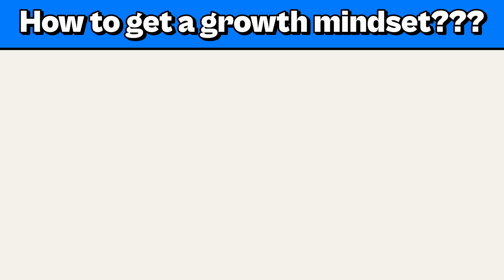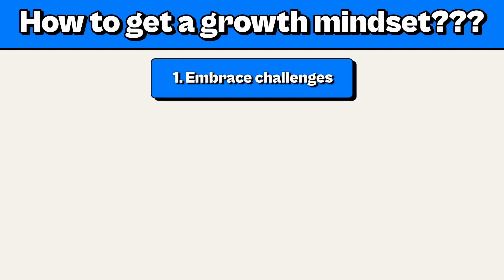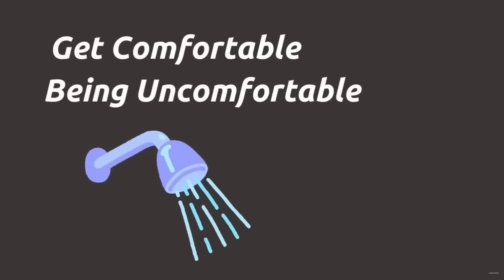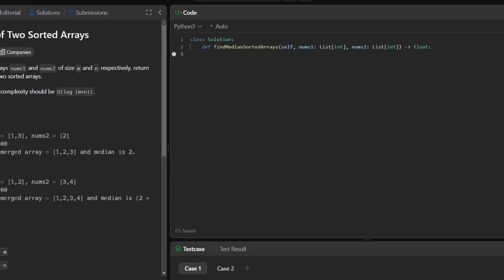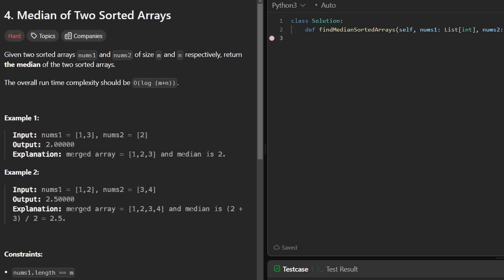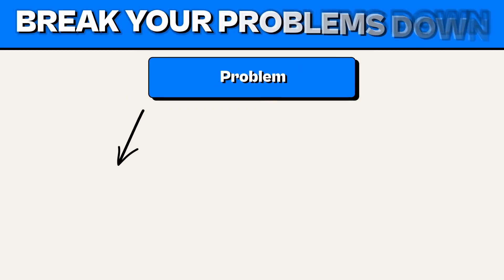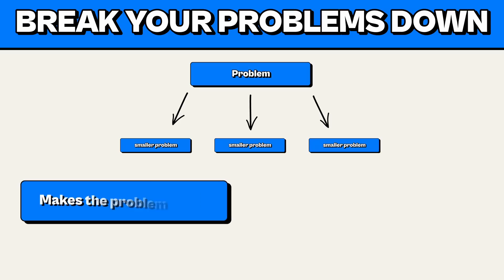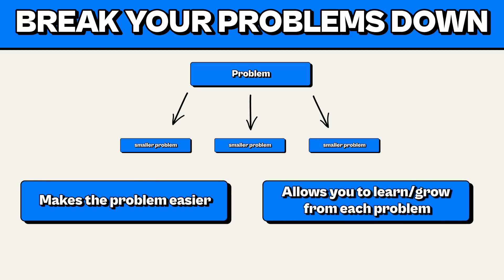Well, in order to develop a growth mindset, the first thing you need to do is embrace challenges. I liked how BigBoxSWE phrased it: get comfortable being uncomfortable. When you encounter a difficult problem, don't shy away from it. Thug it out. I've said this multiple times: break your problems down into smaller parts and tackle each part one by one. It really does help. It makes the problem easier and allows you to learn and grow from each step you take.